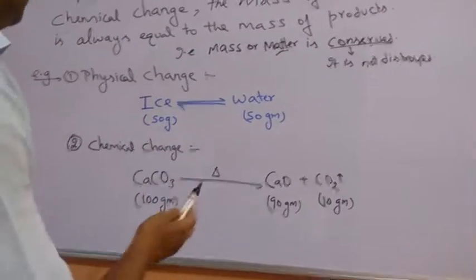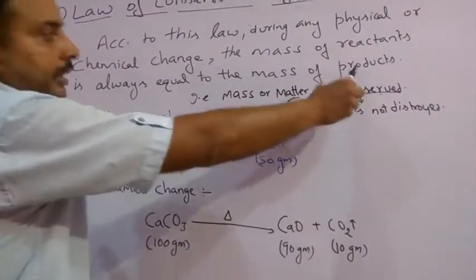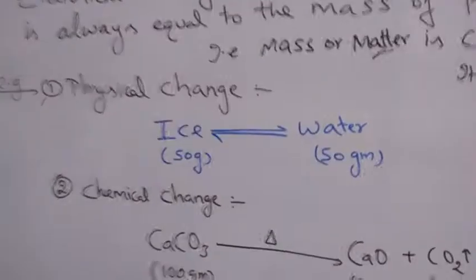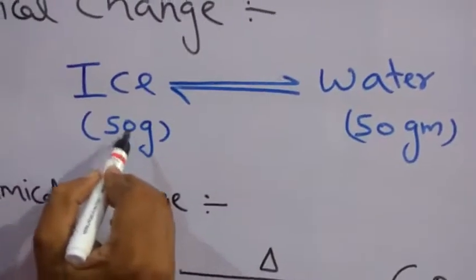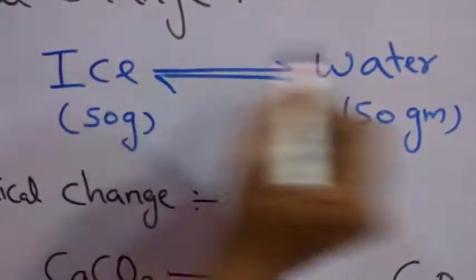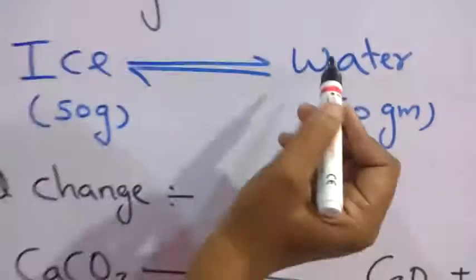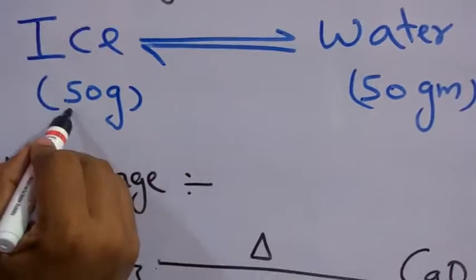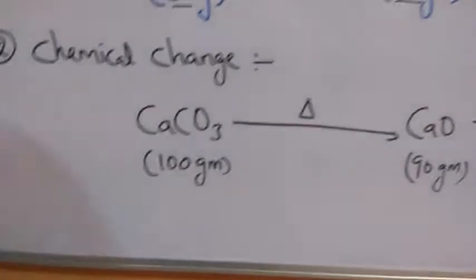As I have said earlier, the mass of the reactants is always equal to the mass of the products. You can take an example of physical change related to this law. We have ice having weighed 50 gram. When it is converted to water, the water again weighs 50 gram. And if you freeze water again to ice, the mass remains same: 50 gram, 50 gram, or 50 gram.